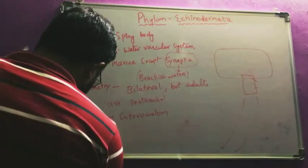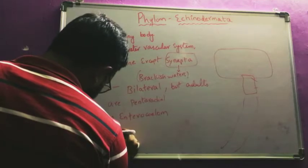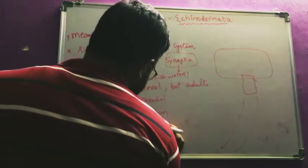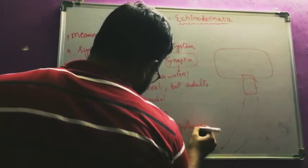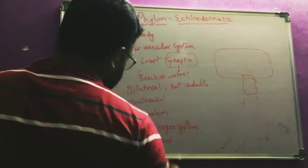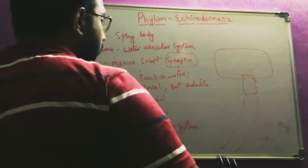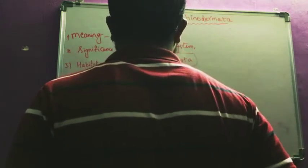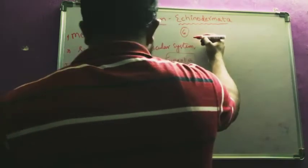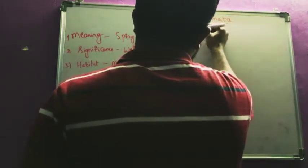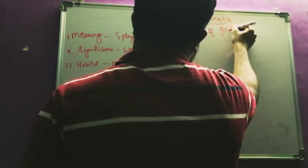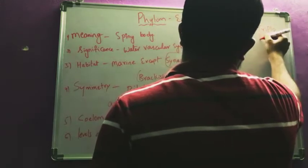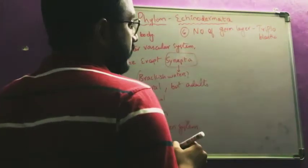The levels of organization: Echinodermata exhibits organ system level of organization. From Nematoda onwards, all animals are exhibiting organ system level of organization. The number of germ layers is triploblastic — three layers.